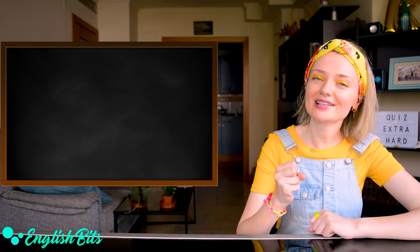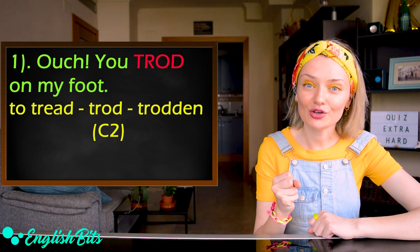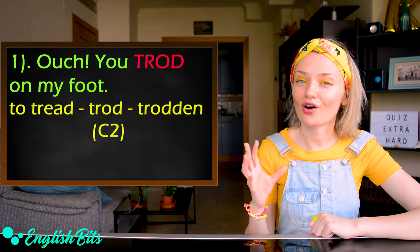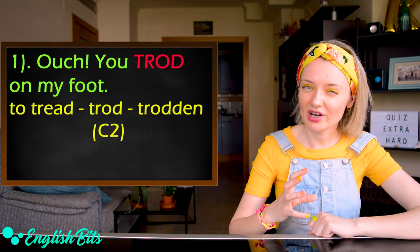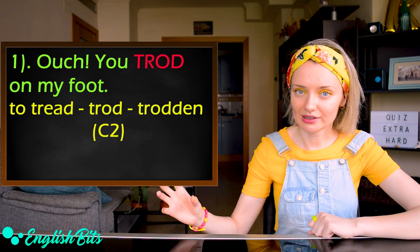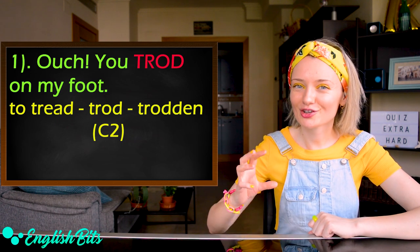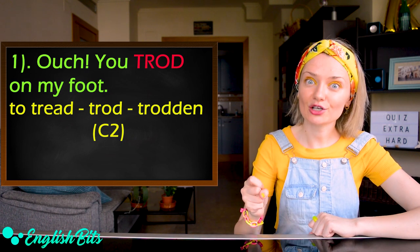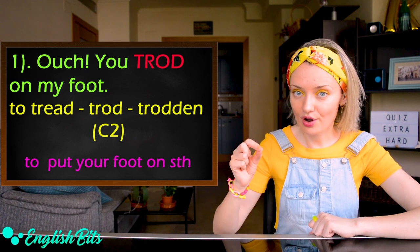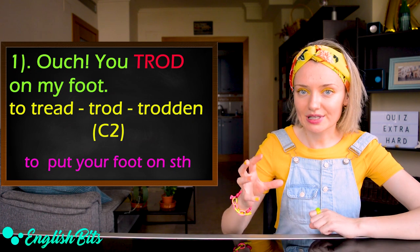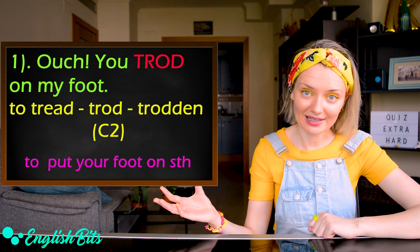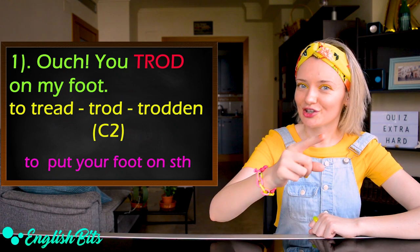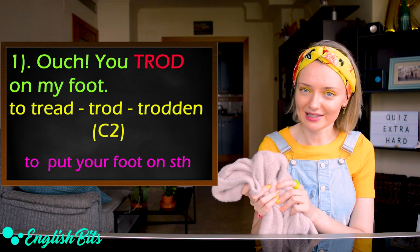The first sentence is: Ouch, you trod on my foot. The verb is to tread, trod, trodden. It's level C2 and it means to put your foot on something. We can also say to step on something — it's a synonym. Remember: to tread, trod, trodden.